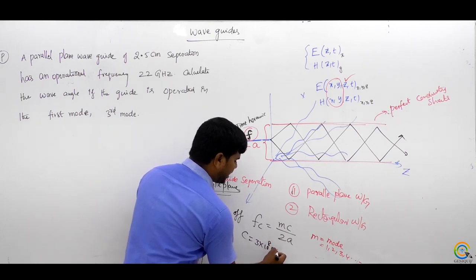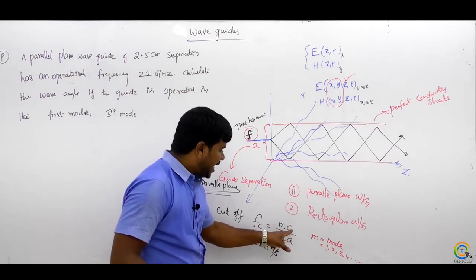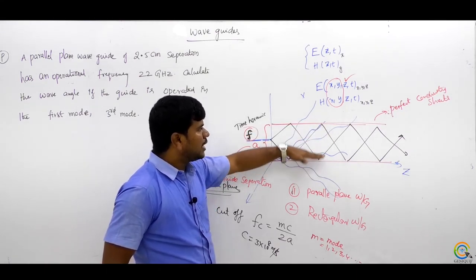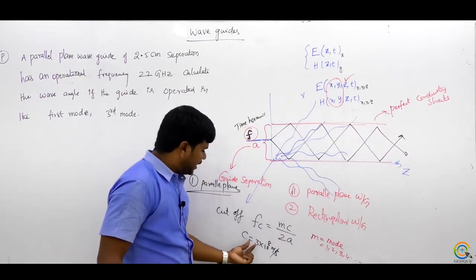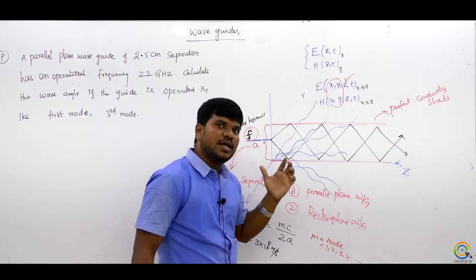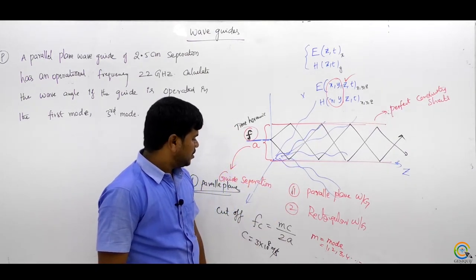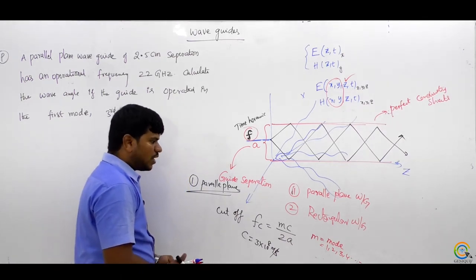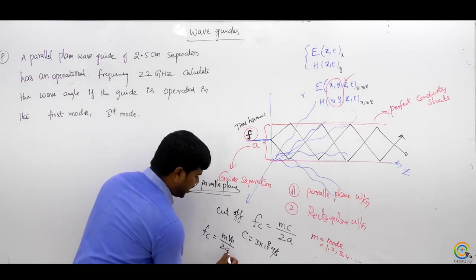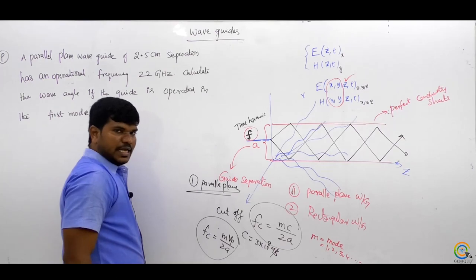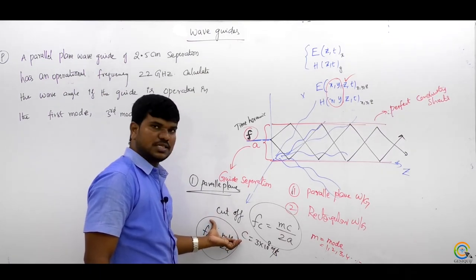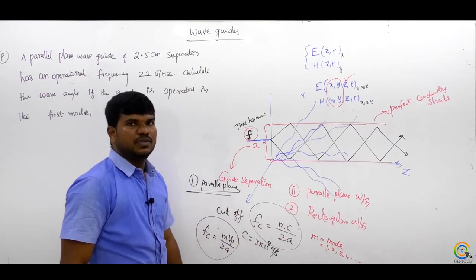If any other material is filled between the plates, we must take the material constants into consideration. In that case, fc becomes m·Vp/2a, where Vp is the phase velocity. If no material is mentioned, you can take c = 3×10⁸ m/s. If material is mentioned, you have to use Vp instead.